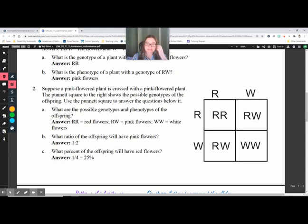If we let capital R be red, W be white, then the genotype of a plant with red flowers would be RR. A plant with a genotype of RW would be pink. It would be red and white. Mix them together, get pink. If we suppose a pink flowered plant is crossed with a pink flowered plant, so an RW and an RW. If we mix those two together, we're going to get an RR, an RW, an RW, and a WW.